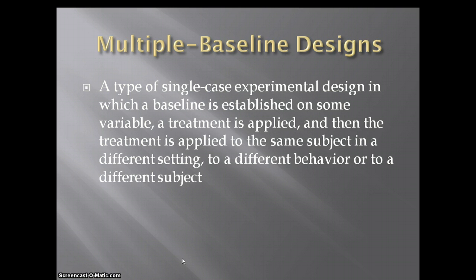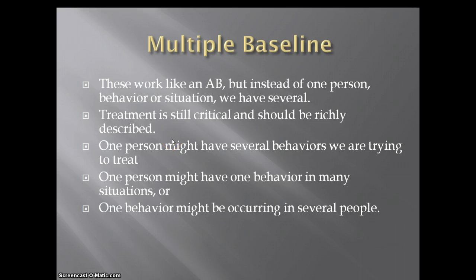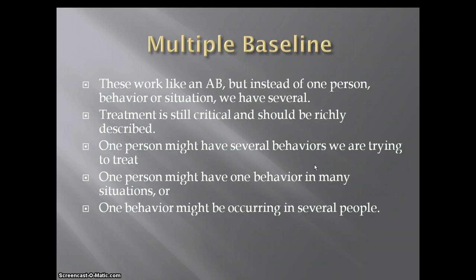There is also a multiple baseline design — a single case experimental design in which a treatment is applied to the same subject in a different setting, to a different behavior, or to a different subject. In schools, kids often have a number of behaviors we're trying to fix. The issue with AB designs is you can only change one thing at a time. So for one person with several behaviors, we start with a first baseline, treat it, and if that changes, we introduce a second baseline for the second behavior. That's multiple baselines.